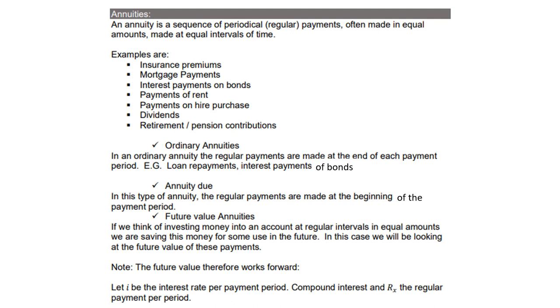Ordinary annuities. In an ordinary annuity, the regular payments are made at the end of each payment period, e.g. loan repayments, interest payments on bonds, etc.